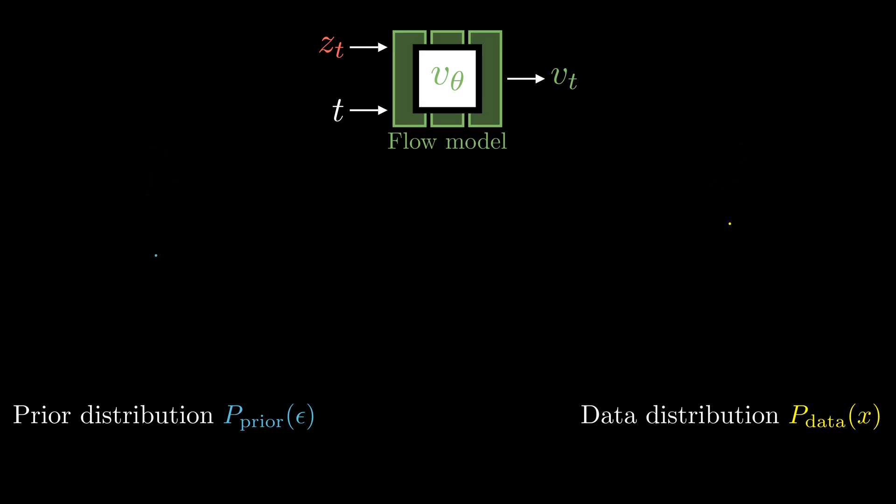Fortunately, finding conditional velocity field is much easier. Let's first draw a sample epsilon from the prior distribution and x from the data distribution. The path between the two samples is just a straight line. We express a point zt on the line as a linear combination of noise epsilon and data x. We can set the velocity vector as x minus epsilon.